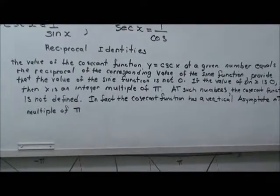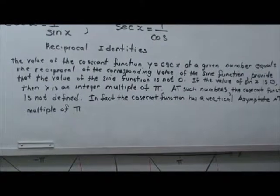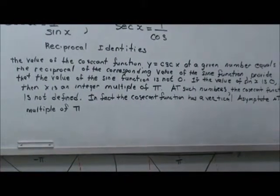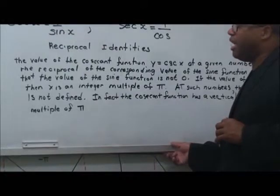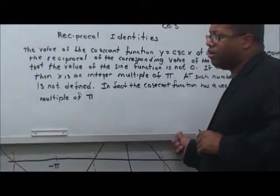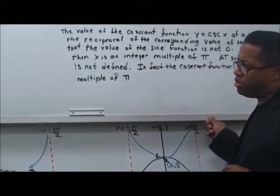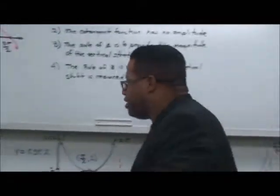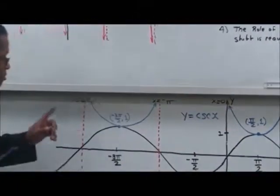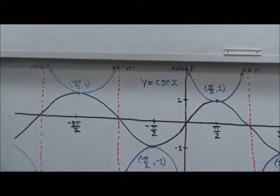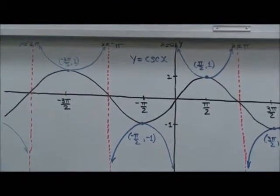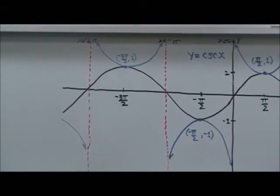In fact, the cosecant function has a vertical asymptote at integers multiple of pi. Now, let's look at these things here a little bit. These are some pretty good graphs here. Get a nice shot there. Now, let's take a minute or so to look at that. Take a few seconds to copy that, too.